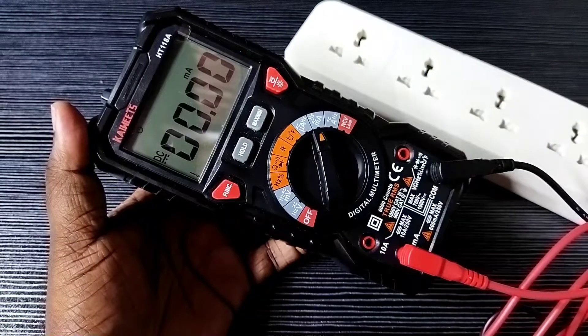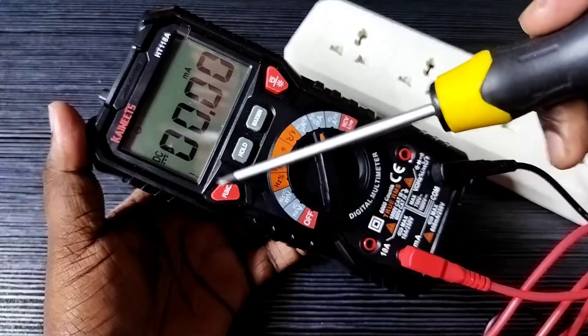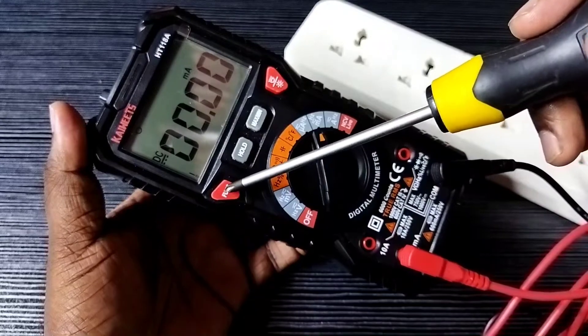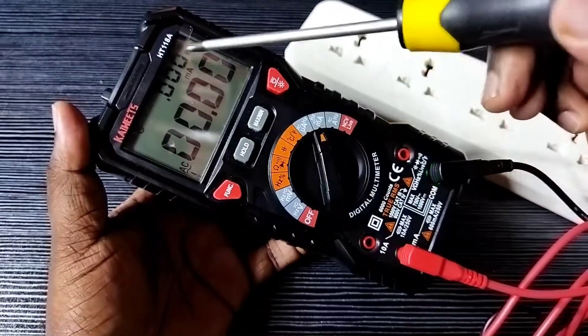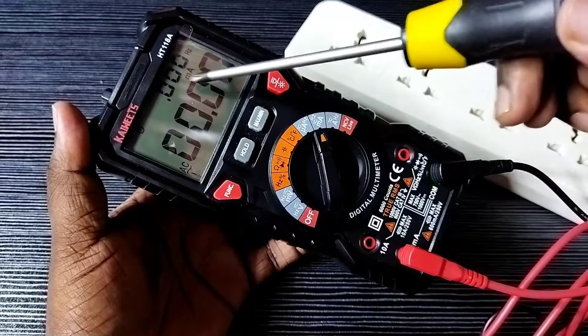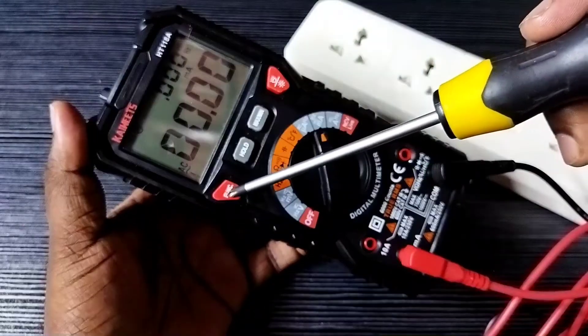Here we can see the function button. Press that function button. Now here we can see AC. That means right now we can measure AC current in microamperes.